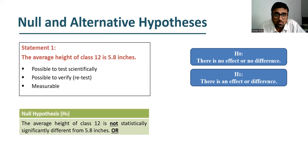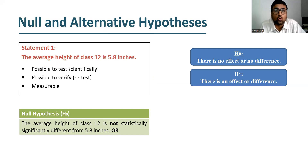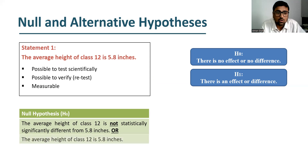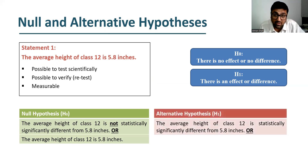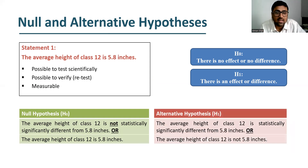So what is our null hypothesis here? The null hypothesis says that the average height of class 12 is not statistically significantly different from 5.8 inches — because null hypothesis shows no difference or no effect. Or in other words, you can say the average height of class 12 is 5.8 inches. And what is the alternative hypothesis? The average height of class 12 is statistically significantly different from 5.8 inches, or the average height of class 12 is not 5.8 inches.